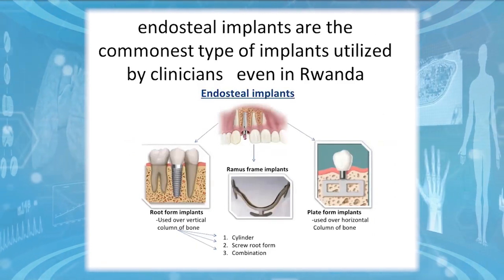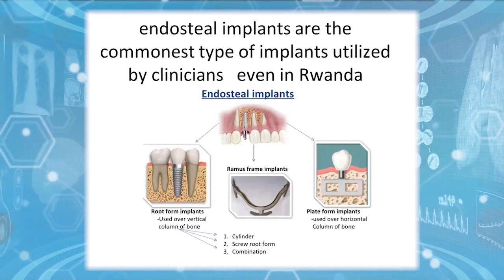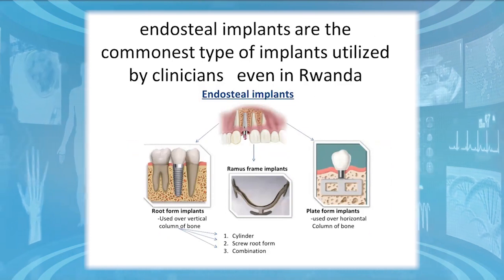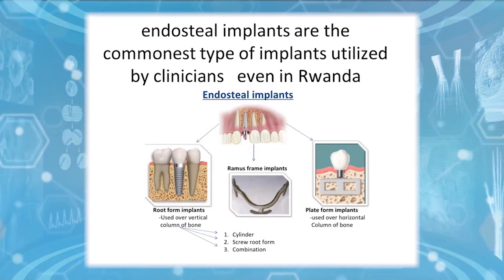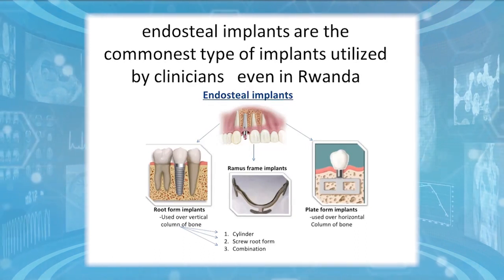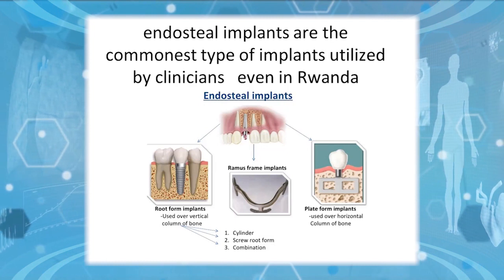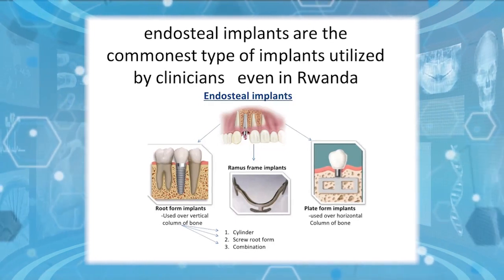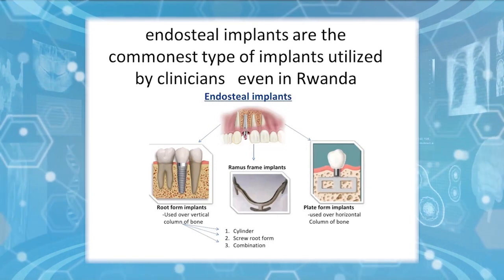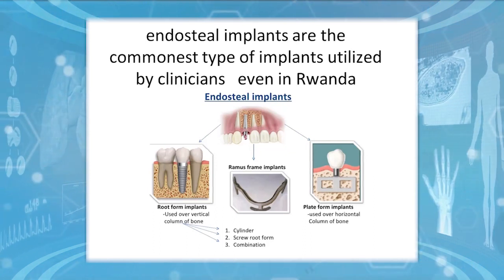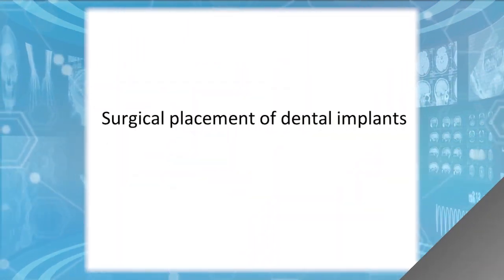Metal dental implants are the most common type utilized by clinicians, even in Rwanda. We have three forms: cylinder, screw root form, and combination. Root form implants are mainly used when there is a vertical column of bone missing. Platform implants are used when there is horizontal bone loss. When the patient has horizontal bone resorption, platform implants are more advantageous; when there is vertical bone loss, root form implants are the best choice.